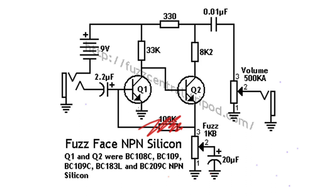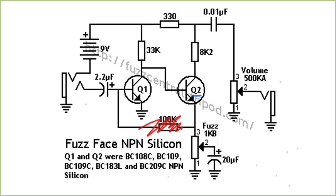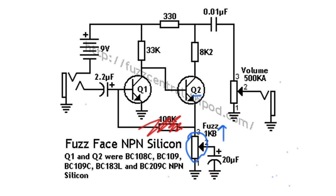The first transistor doesn't have any emitter degeneration, so the voltage gain is going to be the transconductance gain of the transistor times this 33k local load resistance. The second transistor is a bit more complicated. If the fuzz control is turned all the way up, then this emitter resistor is completely bypassed, and the gain of the second stage is going to be the transconductance of the transistor times the total collector resistance — that's 8.2k plus 330 ohm — which is when the second stage has maximum gain. But as you start to turn the fuzz control down, you start to introduce some emitter degeneration into the circuit.